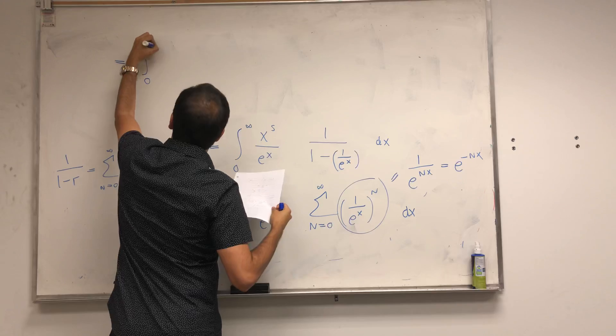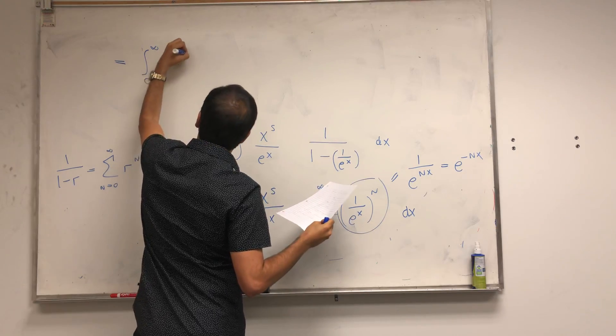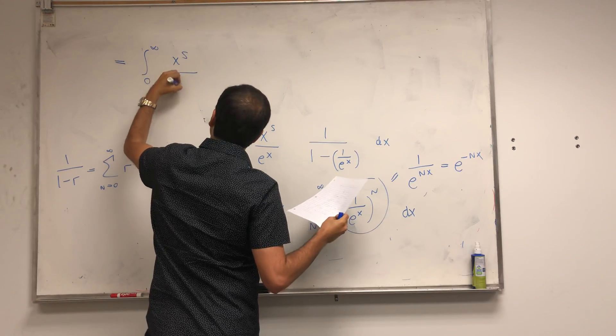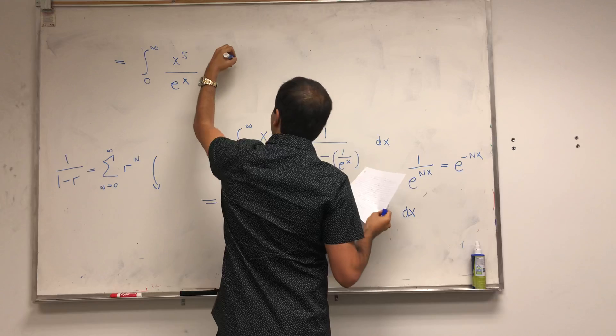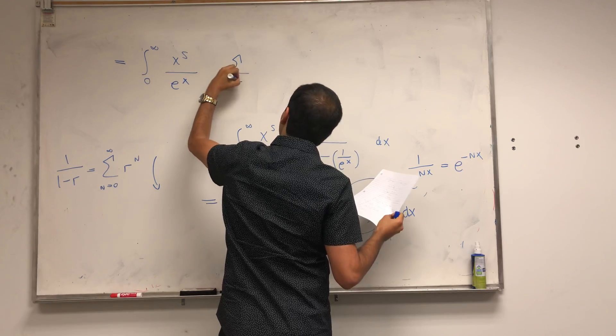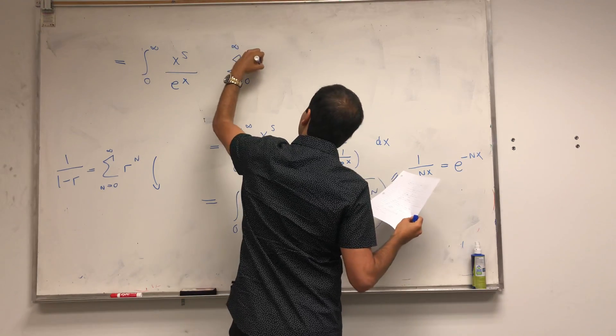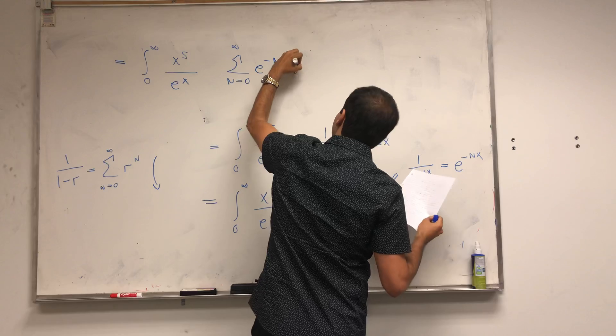So it's integral from 0 to infinity, x to the s over e to the x, sum from n from 0 to infinity, e to the minus nx, dx.